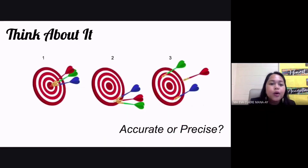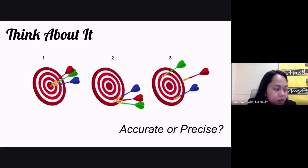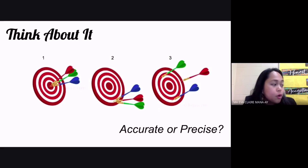Alright, now say you have this diagram. Looking at number one — is it accurate, is it precise, is it neither, or is it both? Let's have Zambia answer. Zambia, can you talk about number one? It's precise, because they're all clumped together.